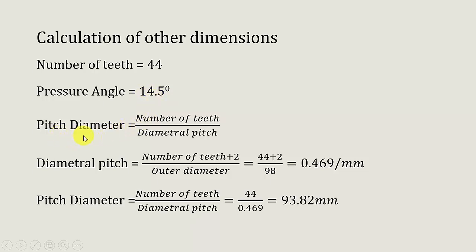Next I want the pitch diameter. The equation for calculating pitch diameter is number of teeth divided by diametral pitch. I have the number of teeth but not the diametral pitch, so first I will calculate it. The equation for diametral pitch is (number of teeth + 2) divided by outer diameter — that is (44 + 2) divided by 98 mm. Once the diametral pitch is calculated, I substitute it into the pitch diameter equation. The pitch diameter is calculated as 93.82 mm.